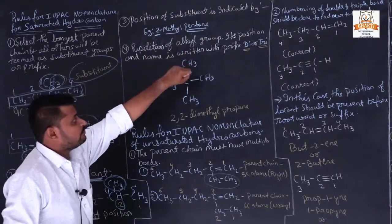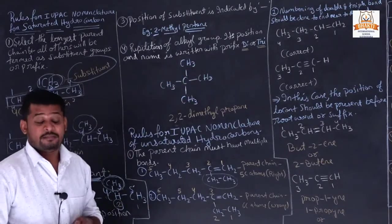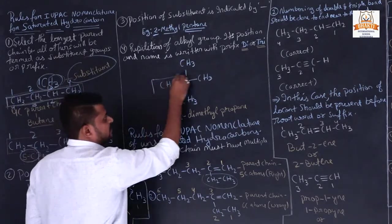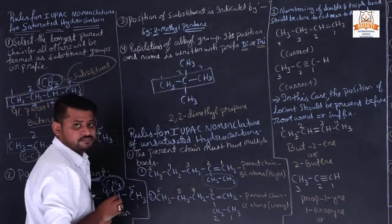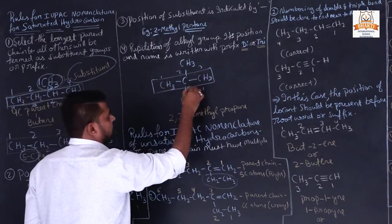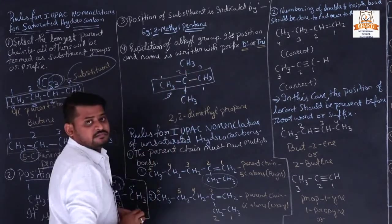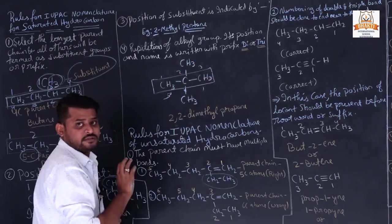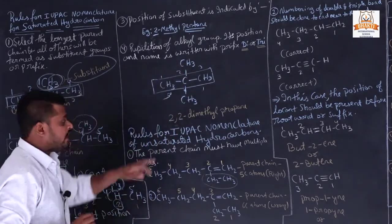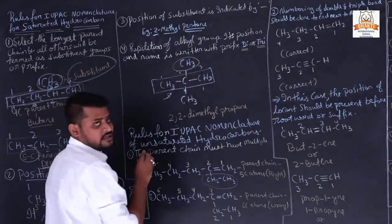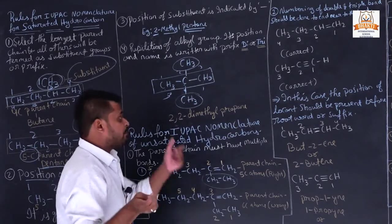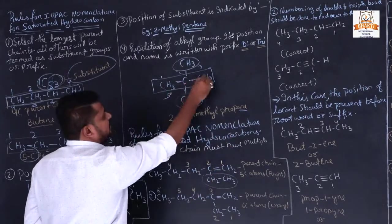If there is repetition of an alkyl group, its positions and name are written using prefixes 'di' or 'tri'. Sometimes two or three substituents are present in the same structural formula. See here: the parent chain is 1, 2, 3. If we number left to right or right to left, the locants are at the second position. Both substituents are methyl.